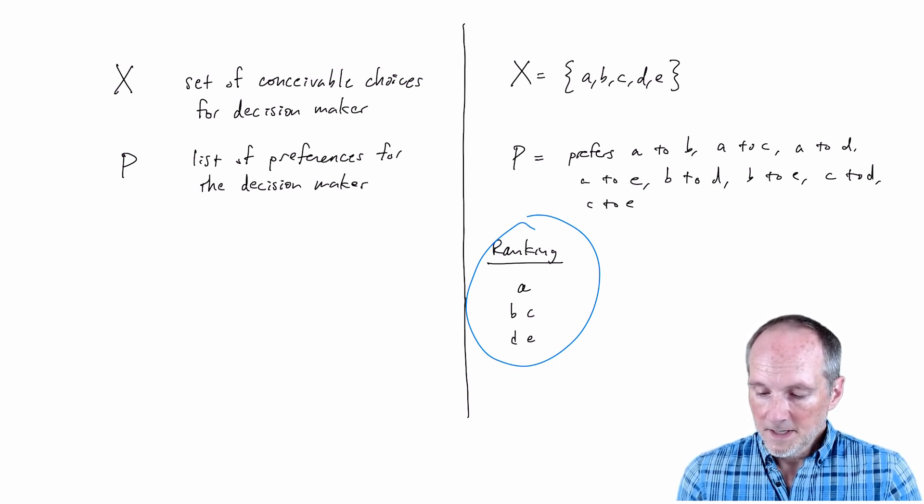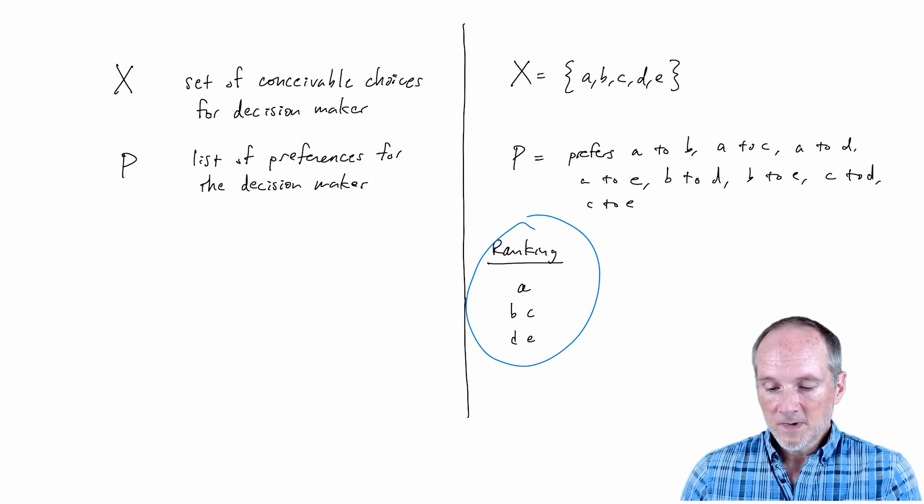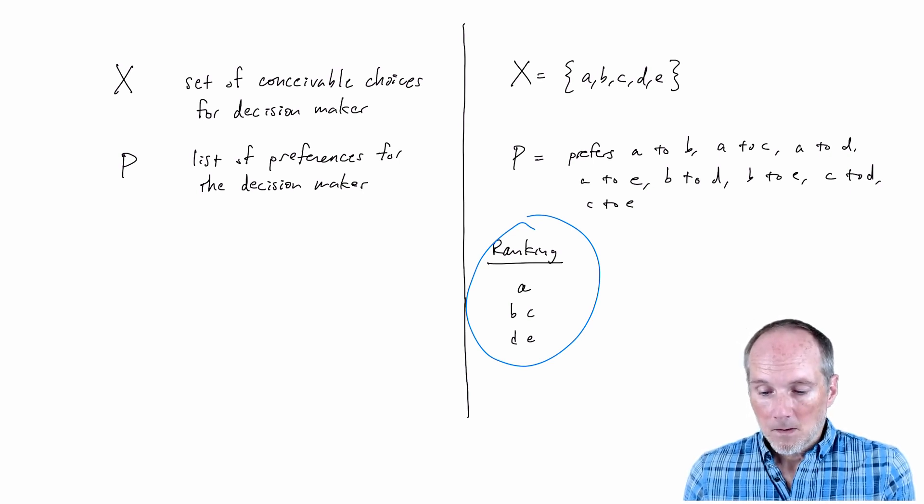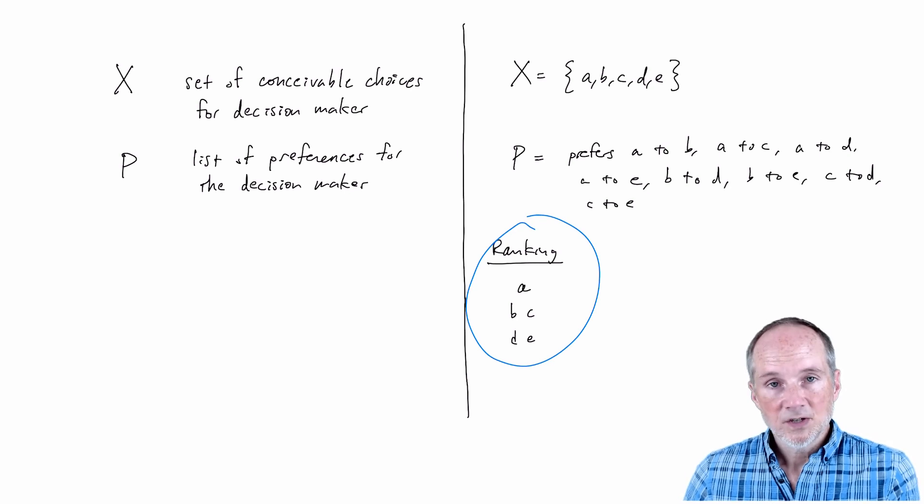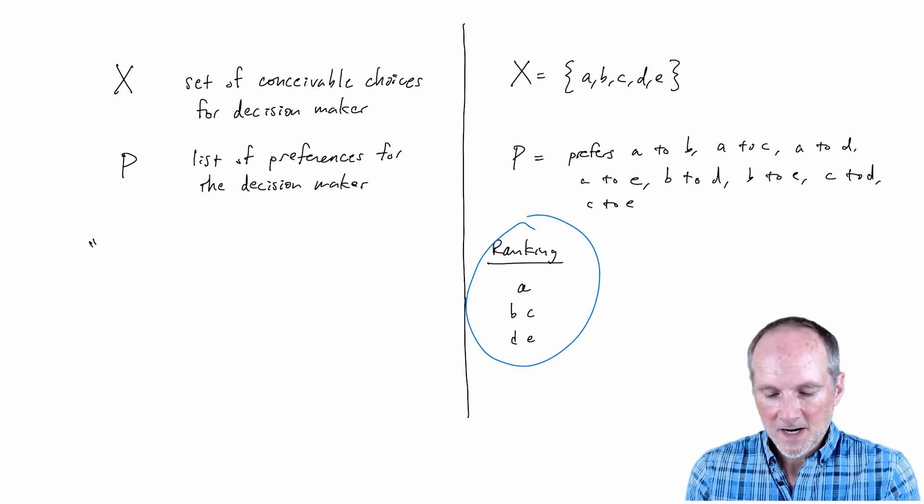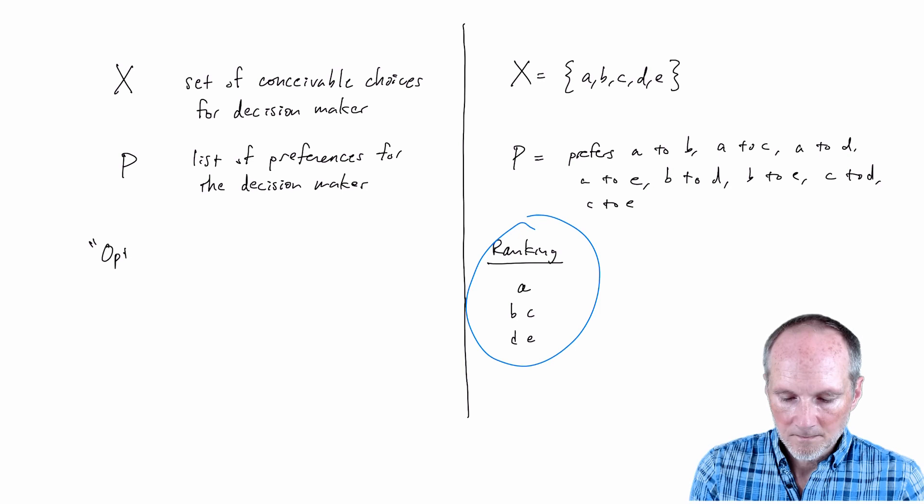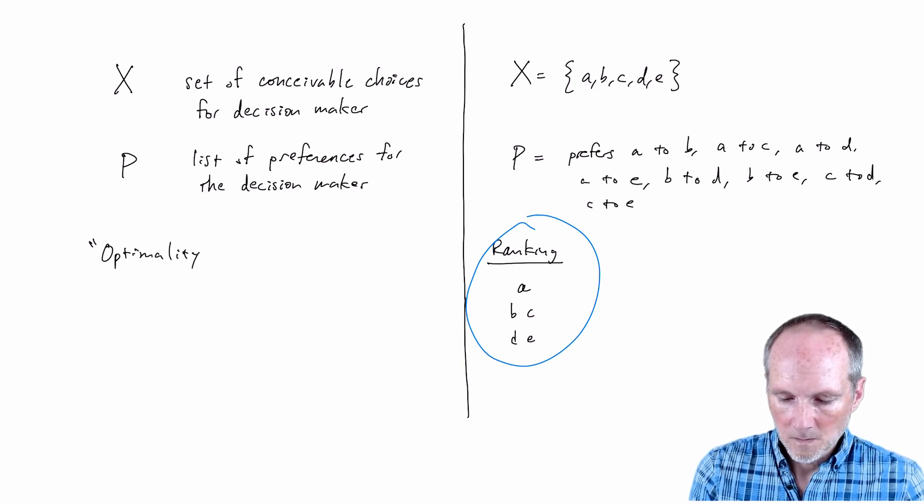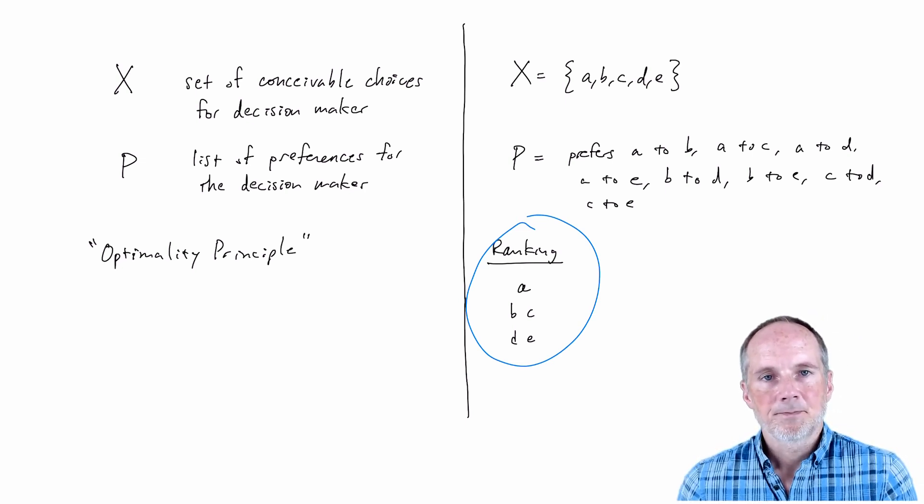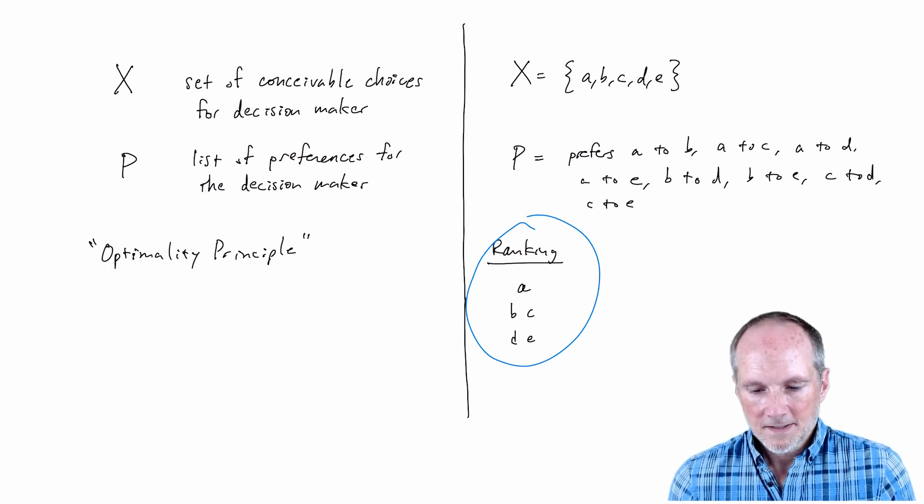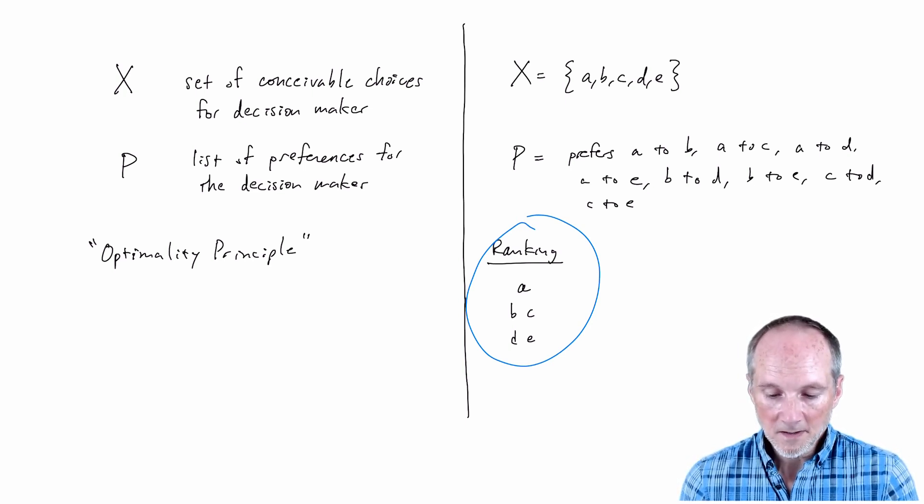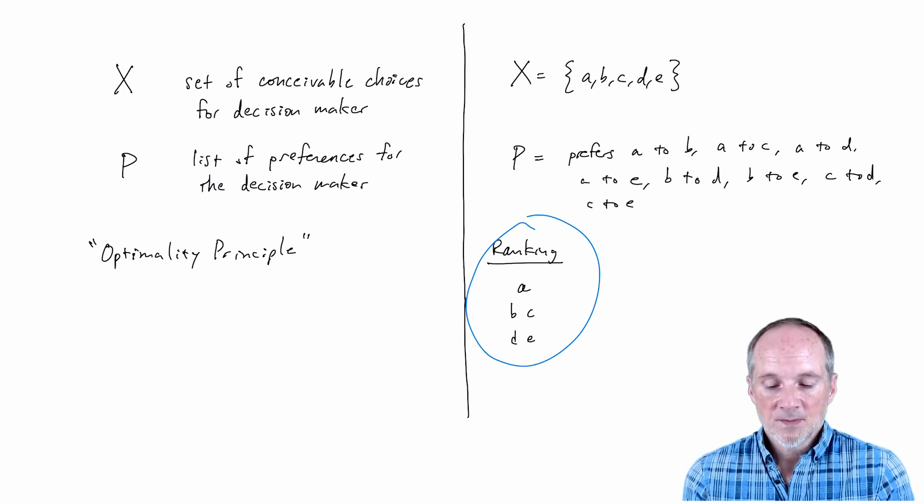So at this point we're almost done here. We have a set of conceivable choices for the decision maker we have preferences for the decision maker so we know what they should be choosing. And so I'm just going to add something that's usually implicit in rational choice modeling I'll call it the optimality principle which is that the decision maker chooses the best thing they can. That's I guess where the rational term comes in, comes from in rational choice modeling. This is something that's not usually stated in a rational choice model it's just understood.